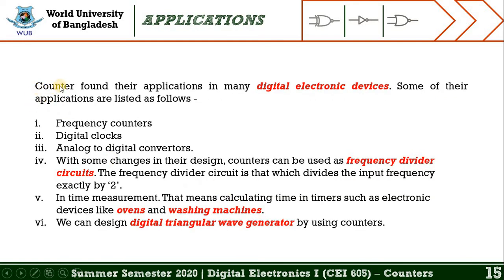Counters find their applications in many digital electronic devices. Some applications include frequency counters, digital clocks, and analog-to-digital converters. With some changes in design, counters can also be used as frequency divider circuits, which divide the input frequency by two. Other applications include time measurement in timers such as ovens and washing machines, and designing digital triangular wave generators.